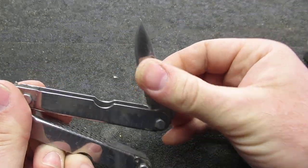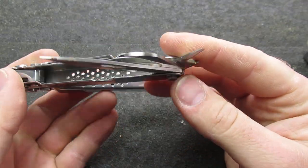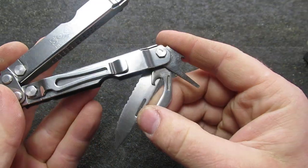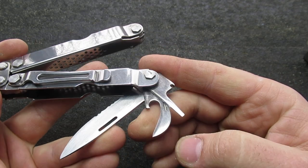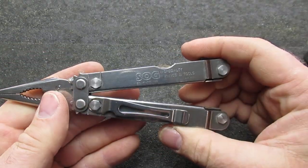On this side, my tool comes with the serrated, partially serrated knife, the small screwdriver, and then the can opener. So those are the tools on this side.